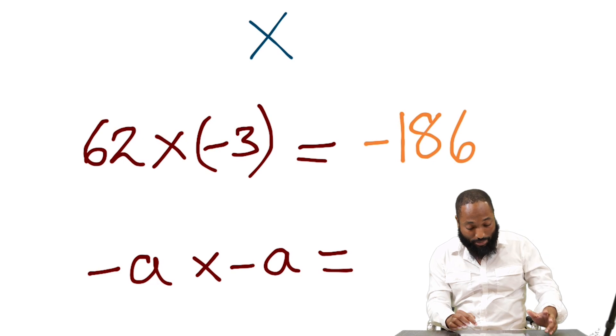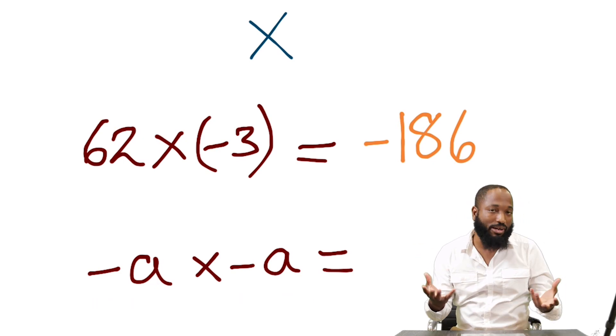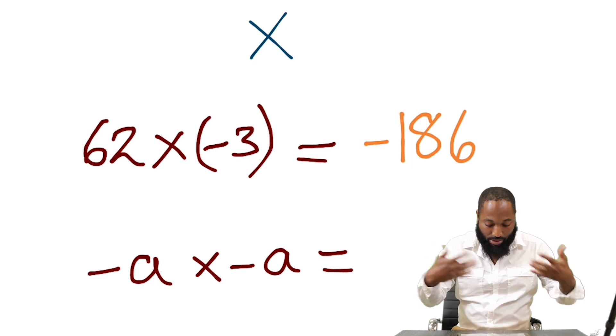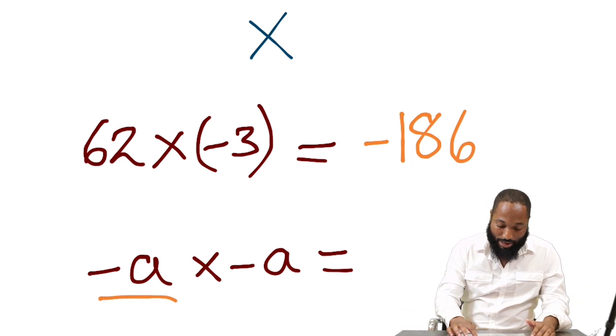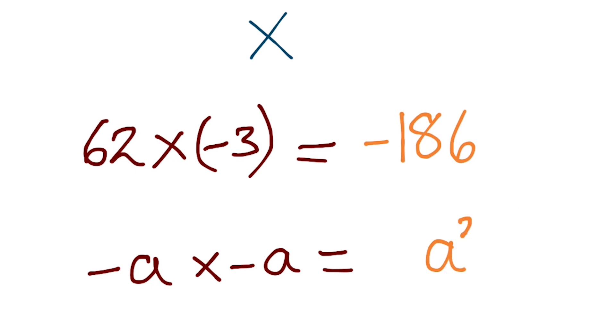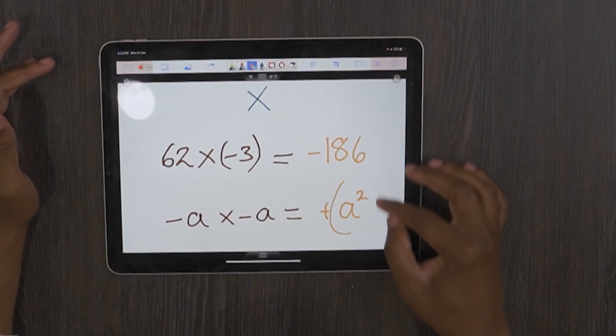Now this also works for multiplication. A negative number by a negative number here. We don't know what the number is. It's algebra. We use a to represent the number here. It's a variable. So it's negative a by negative a, which is actually a squared if you know your algebra. And because both of them are negative, we're sure that the answer will actually be positive, whatever that is.